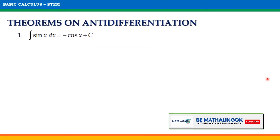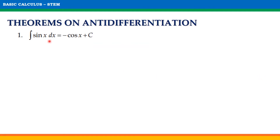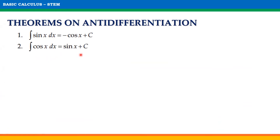The following are the theorems on antidifferentiation involving trigonometric functions. For the first one, the indefinite integral of sin x with respect to x is equal to negative cosine x plus C. For the second one, the indefinite integral of cosine x with respect to x is equal to sin x plus C.